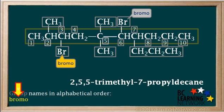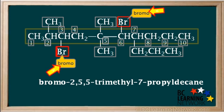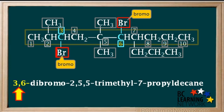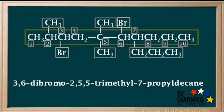The next group we add to the name is the first one on the alphabetical list: bromo. We add dibromo dash before 2,5,5 in the name, because we have two bromo groups. Note that dibromo is all one word. We write numbers to specify which carbons the bromo groups are attached to — one is on carbon 3 and the other is on carbon 6 — so we write 3,6 dash in front of dibromo. The final name of this compound is 3,6-dibromo-2,5,5-trimethyl-7-propyl decane.